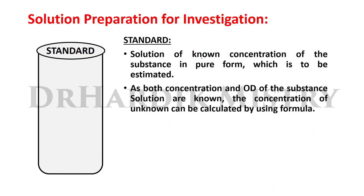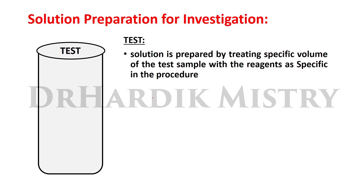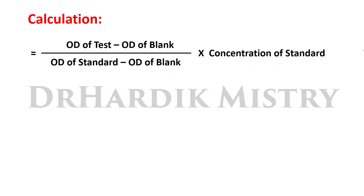The standard is a solution of known concentration of the substance in pure form to be estimated. Since both concentration and OD of the standard are known, the concentration of the unknown can be calculated using the formula. The test solution is prepared by treating a specific volume of the test sample with the reagents. The formula is: concentration of test = (OD of test minus OD of blank) divided by (OD of standard minus OD of blank) multiplied by concentration of standard.